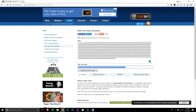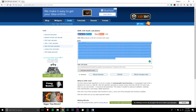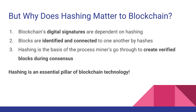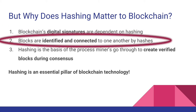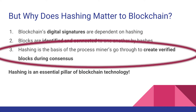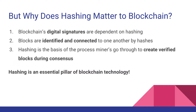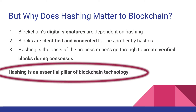So why does this matter to blockchain? Because hashing is what enables digital signatures and validation of blocks on the blockchain. Hash functions are the crux of the work that miners do to successfully mine a block, as well as the method by which transactions and blocks are signed and identified. Without hashing, blockchain and cryptocurrencies would not exist.